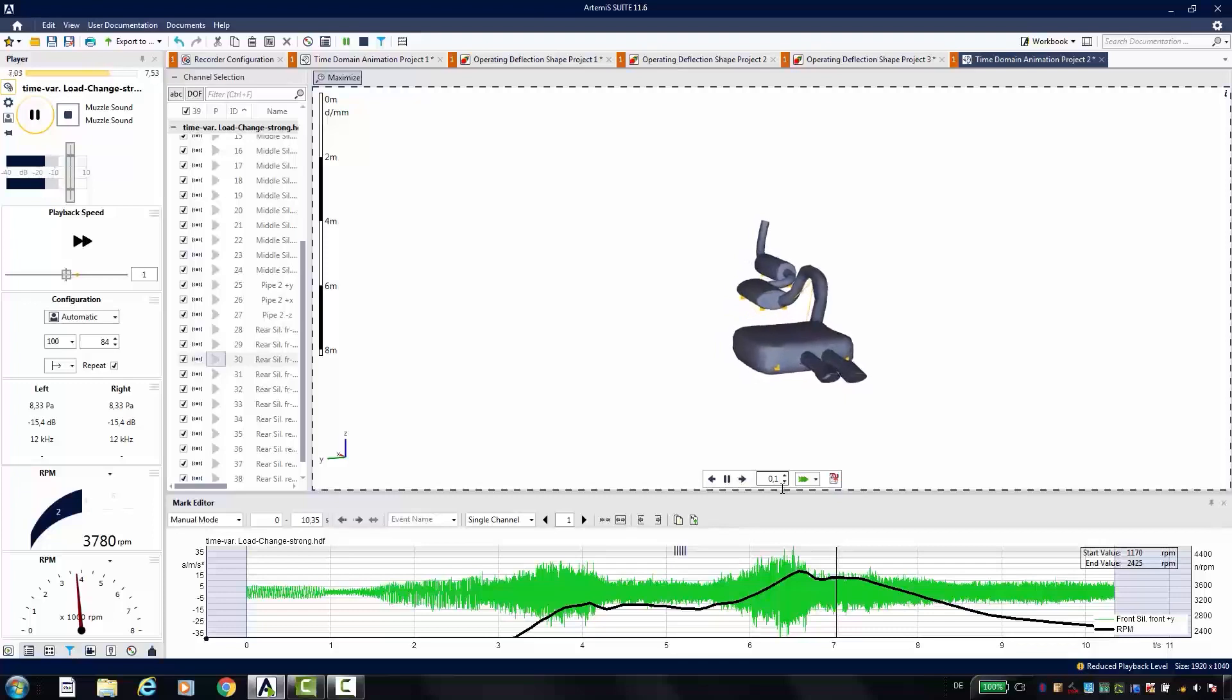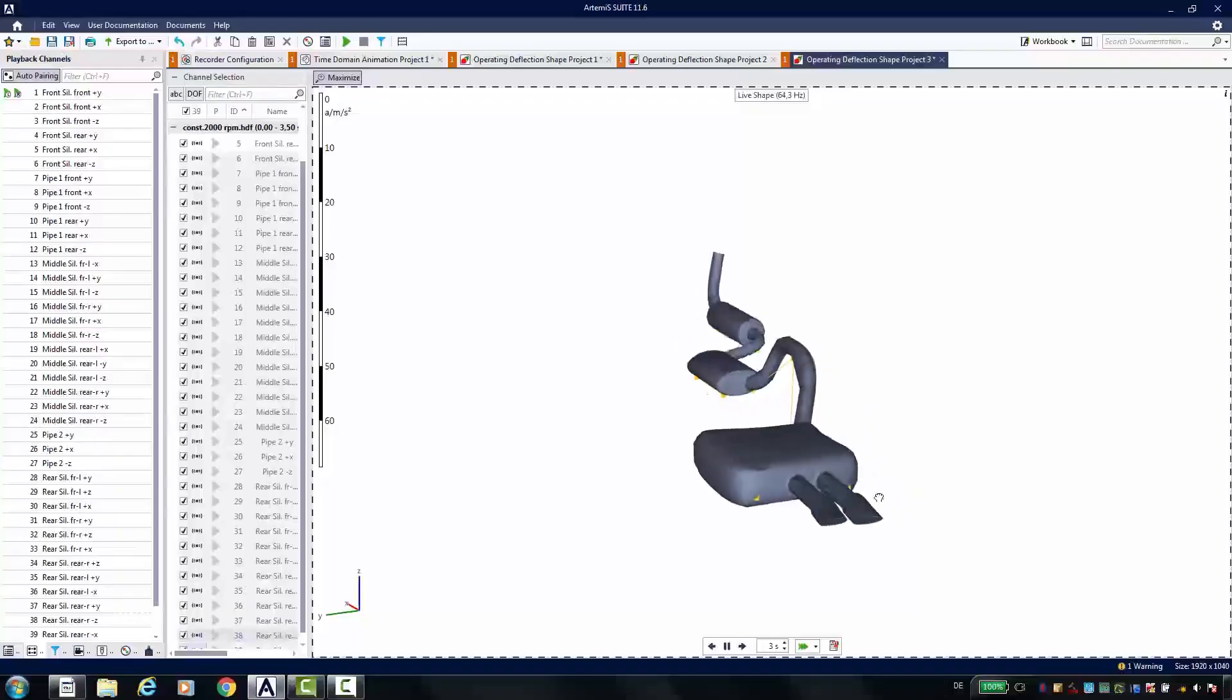And so we can now in all operating states analyze, in addition to the actual level values, which of course I still can analyze in the classic wave diagrams. But I can also see the vibration form of my test objects, simply have this overall picture. Then it's much easier to recognize where I have to introduce a stiffening measure so it will be effective.